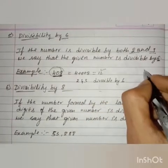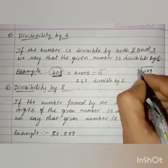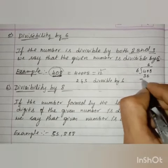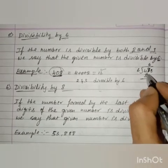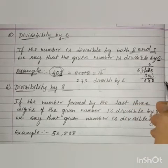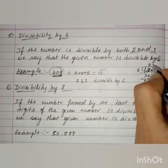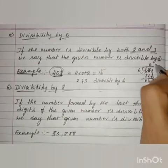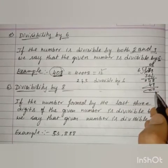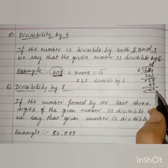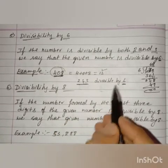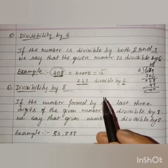Now let us check whether it is divisible by 6 or not by performing the actual division. The number is confirmed to be divisible by 6. So if a number is divisible by both 2 and 3, then the given number is also divisible by 6. This is the divisibility rule for 6.